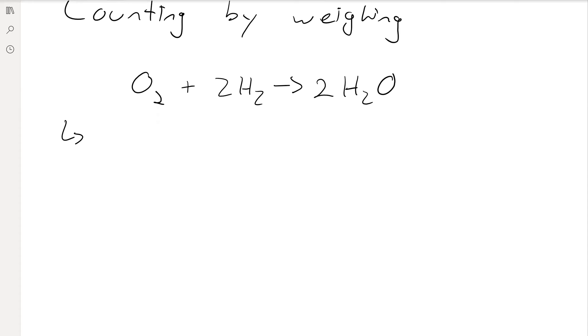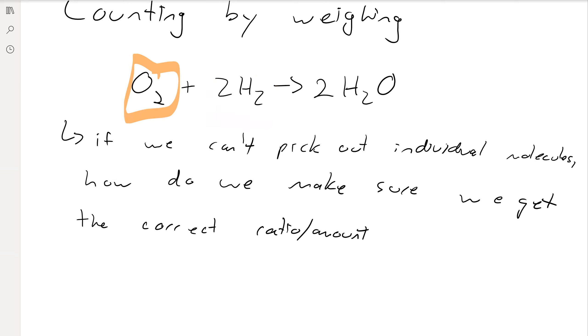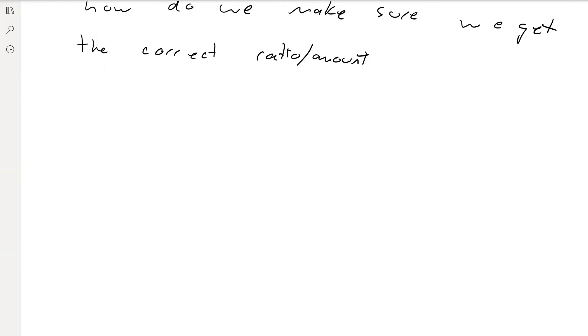So with these molecules and these atoms, they're just so absolutely tiny, we can't go in there and pick them out one by one. So if we can't pick out individual atoms or molecules, whichever one you want to use, how do we make sure we get the correct ratio slash amount? In this case, for every one O2, you want two H2s. How do you ensure that you get twice as many H2s as you do O2s when they're so tiny and you can't really pick them out or anything like that?